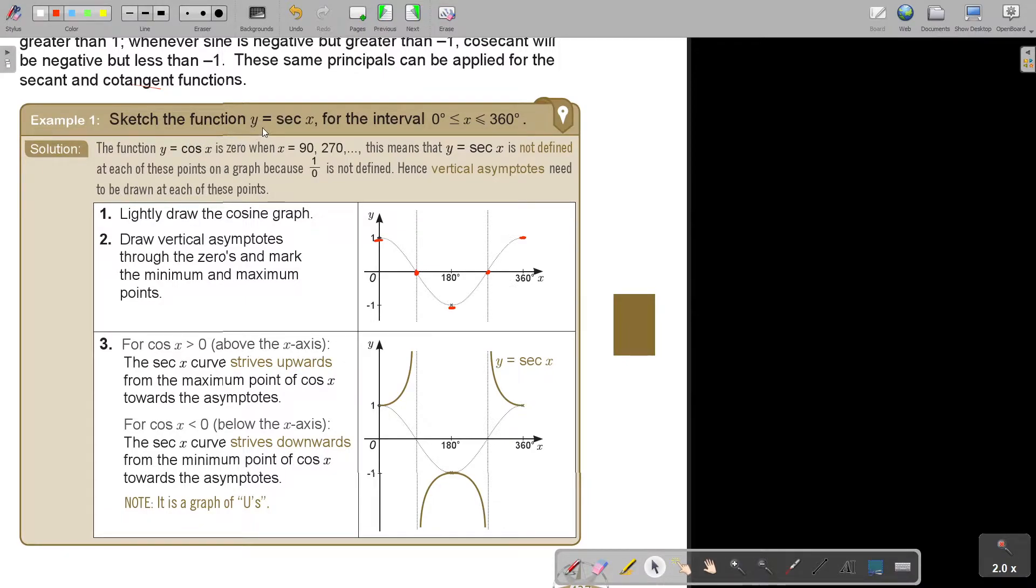Let's start. Sketch the function y equals sec x for the interval 0 to 360. The function y equals cos x is 0 when x... You know that basic graph already. This is the basic graph. This means that y is not defined at each of these points because 1 divided by 0 is not defined. Each vertical asymptote needs to be drawn.